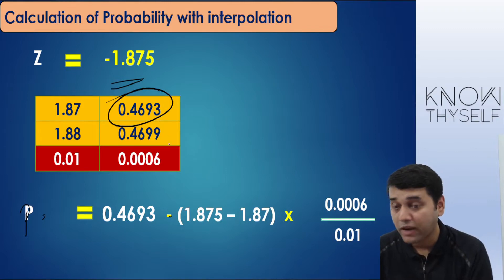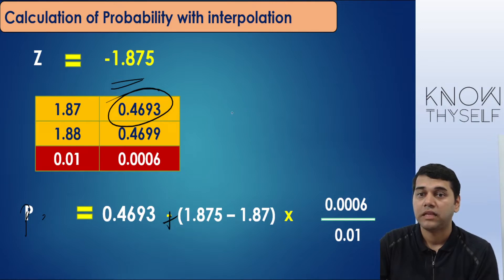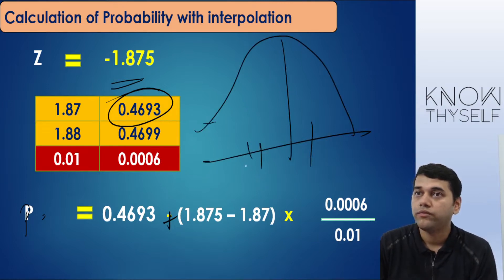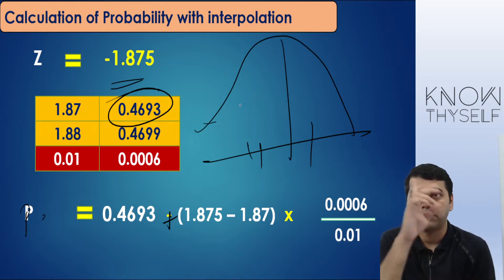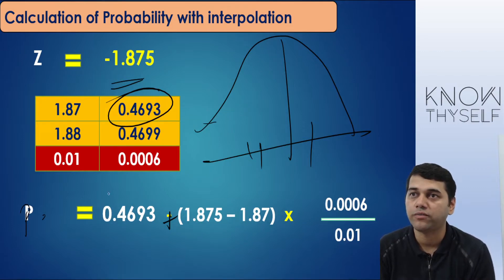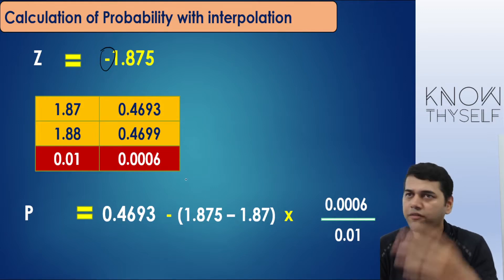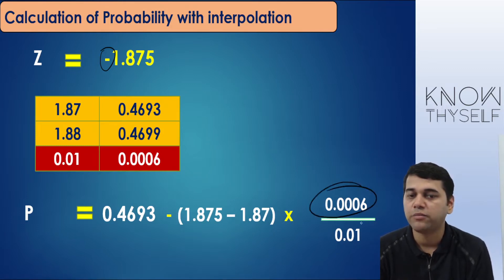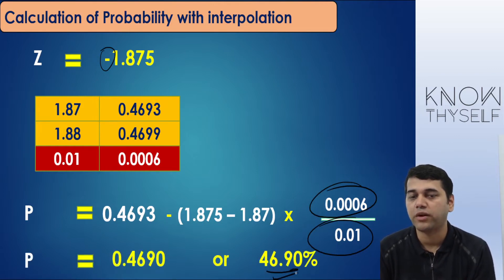The Z value of −1.875 falls between 1.87 and 1.88 in the table (taking absolute value). The difference between the values is 0.01. Since it is a negative value, I will subtract from the base. Using interpolation: 1.875 is exactly in the middle of 1.87 and 1.88, so probability = 46.90%. This is the probability that the company will face financial difficulty — a minus-side calculation in the normal distribution.